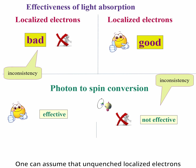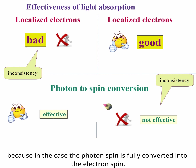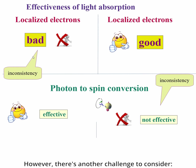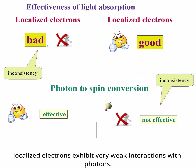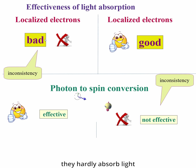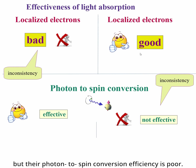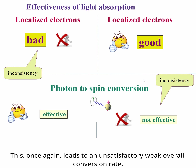One might assume that quenched localized electrons are ideal for photon-to-spin conversion, because in this case the photon spin is fully converted into the electron spin. However, there is another challenge: localized electrons exhibit very weak interaction with photons. This presents a dilemma. While photon-to-spin conversion is efficient for localized electrons, they hardly absorb light, resulting in an overall poor conversion rate. On the other hand, conduction electrons absorb light effectively, but the photon-to-spin conversion efficiency is poor, again leading to an unsatisfactory overall conversion rate.